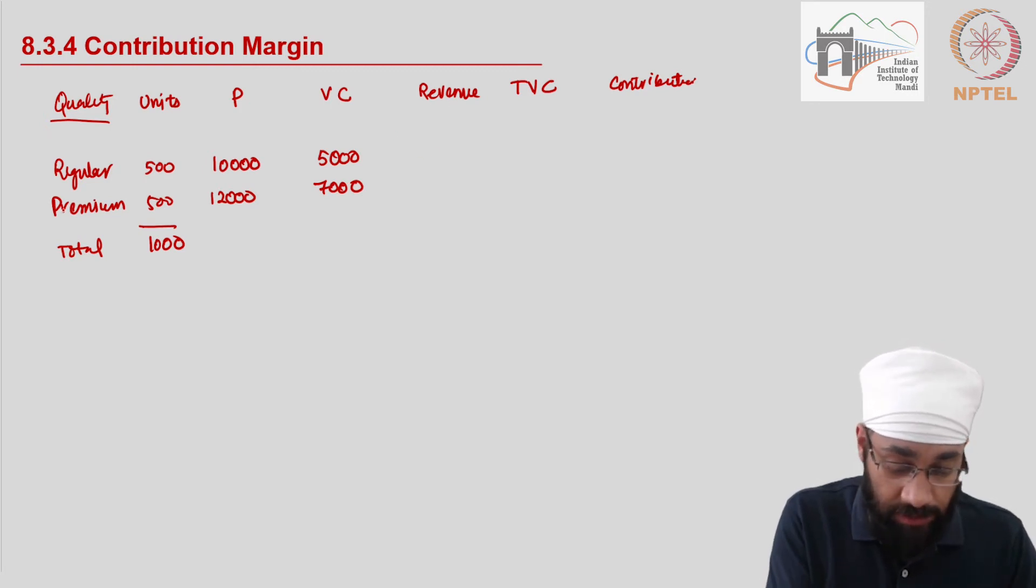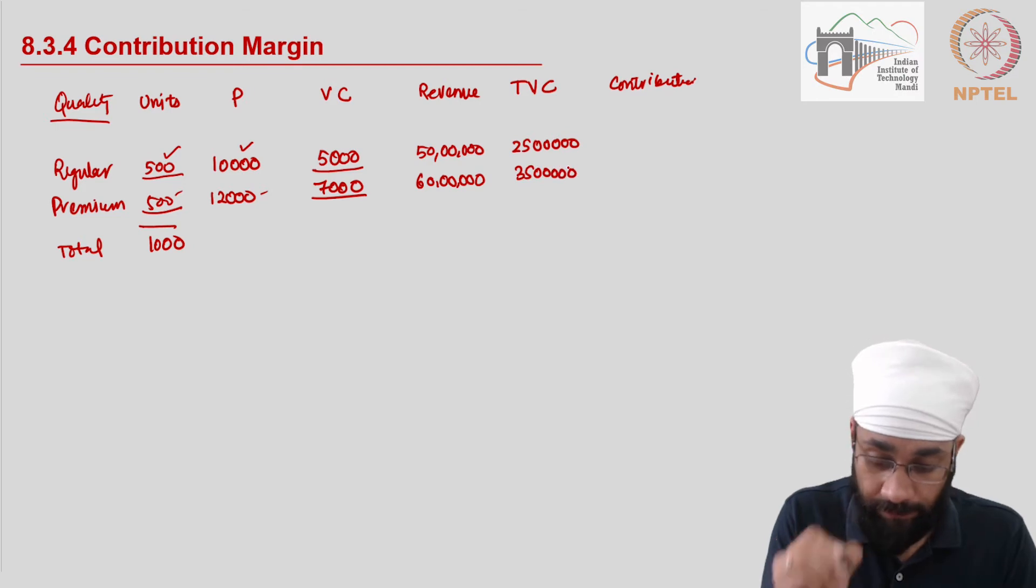The revenue hence from the regular comes out to be units multiplied by the price, so this comes out to be 50 lakhs. On the other hand, for premium, this comes out to be 60 lakhs. The total variable cost comes out to be this multiplied by this, so this is 25, and you have 500 multiplied by this, so you have 35 lakhs here.